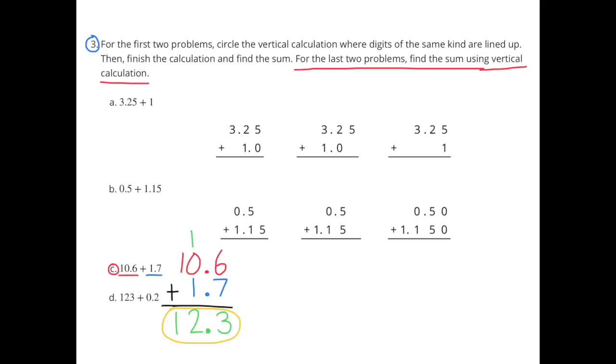For the last two problems, find the sum using vertical calculation. 10 and 6 tenths plus 1 and 7 tenths. I line up the decimal and then add. 6 plus 7 equals 13. Carry the 1. 1 plus 0 plus 1 equals 2. And I bring down the 1. 10 and 6 tenths plus 1 and 7 tenths equals 12 and 3 tenths.